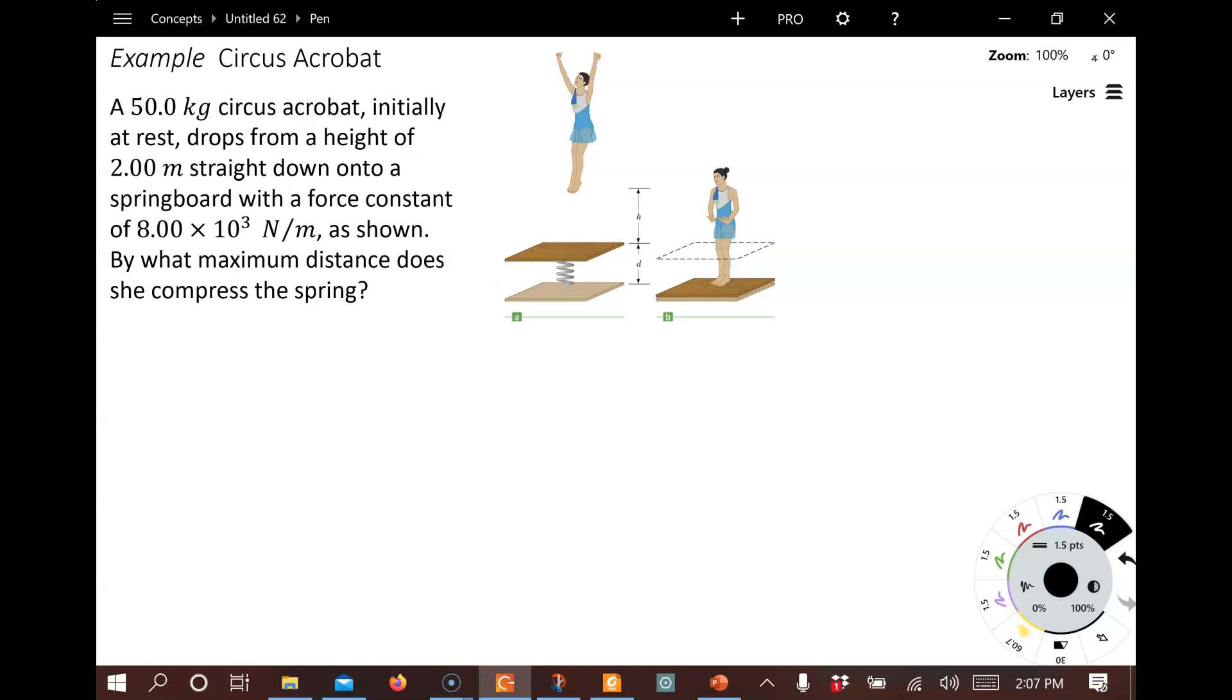Alright, so we've got a before and an after of a gymnast who starts up in the air at a height h above a platform and afterwards falls down and compresses the spring of the platform by a distance d. We're going to use mechanical energy and conservation of mechanical energy to solve for this problem here.